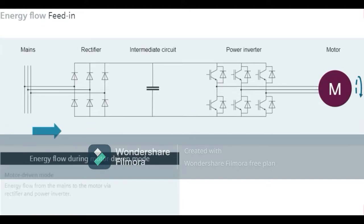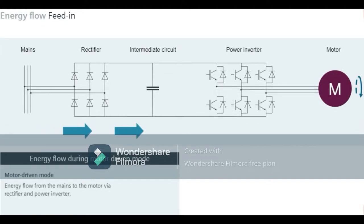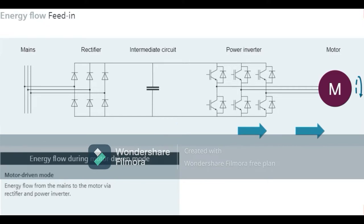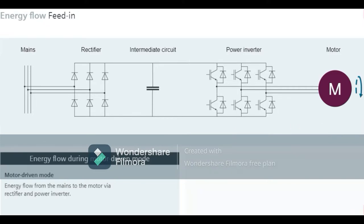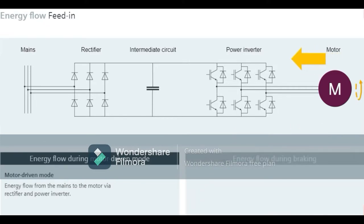In motor-driven mode, the energy flows from the mains to the motor via the rectifier and power inverter when the motor is propelling. But how does the energy flow behave during braking? Since the rectifier can only guide the energy in one direction, the dynamic energy must be discharged in a different way.